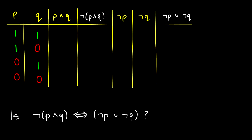Let's do another example. Is ¬(P∧Q) logically equivalent to ¬P∨¬Q? We just did P∧Q before, which is 1, 0, 0, 0. Now if we take the negation of that, the values just flip. So ¬(P∧Q) is going to be 0, 1, 1, 1. We now have the truth conditions for ¬(P∧Q).